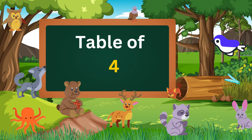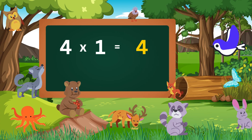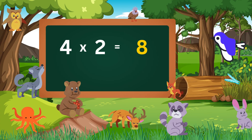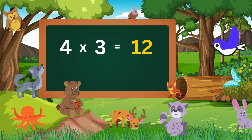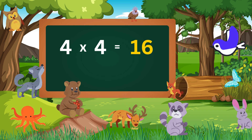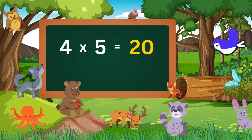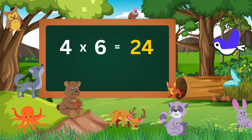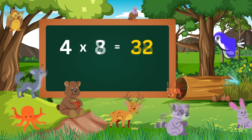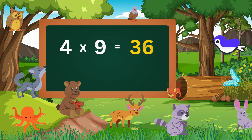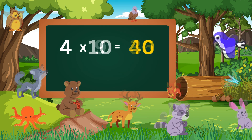Table of four. Four ones are four. Four twos are eight. Four threes are twelve. Four fours are sixteen. Four fives are twenty. Four sixes are twenty-four. Four sevens are twenty-eight. Four eights are twenty-five. Four nines are thirty-six. Four tens are forty.